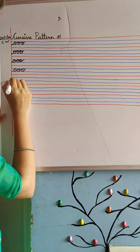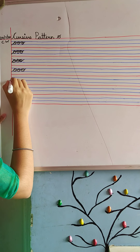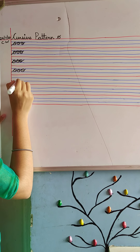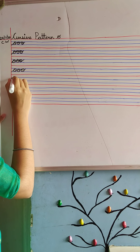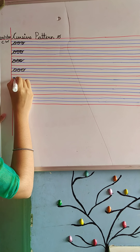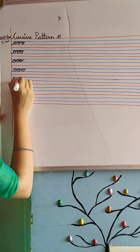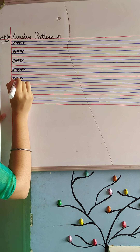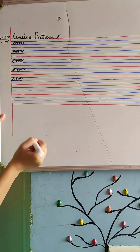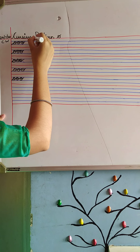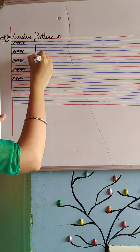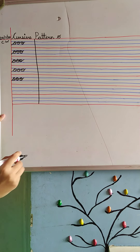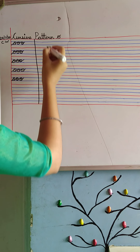Now again the fourth time, touching from the margin line, from the second blue line, we're going to write O continuously without leaving our hand. O for orange. Now, with the help of a scale, you will draw a line, and we are going to write again.